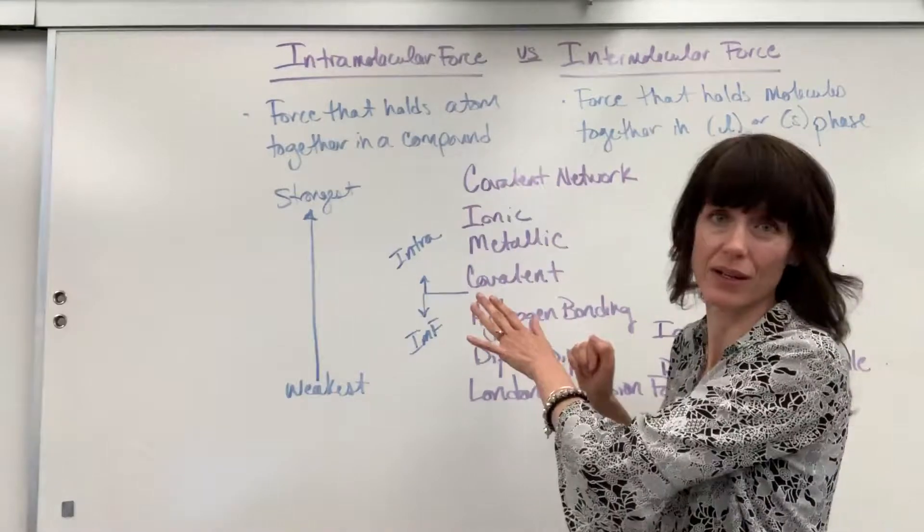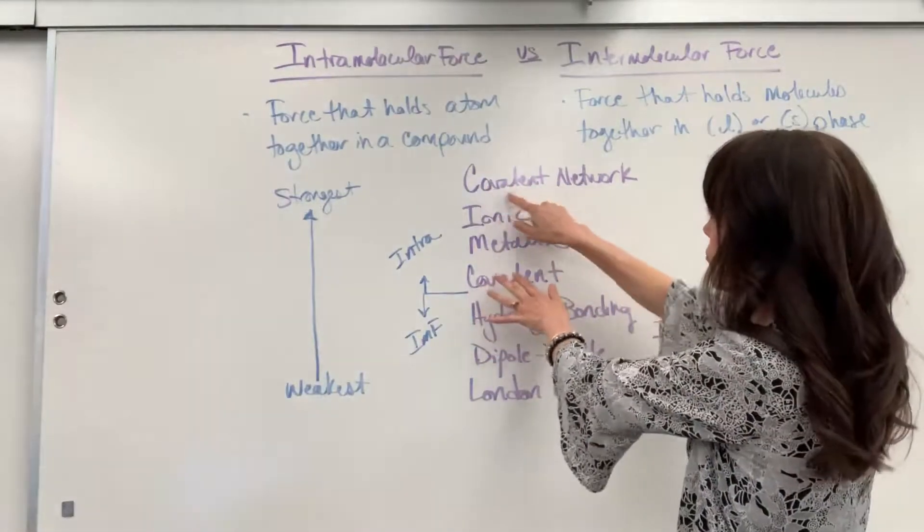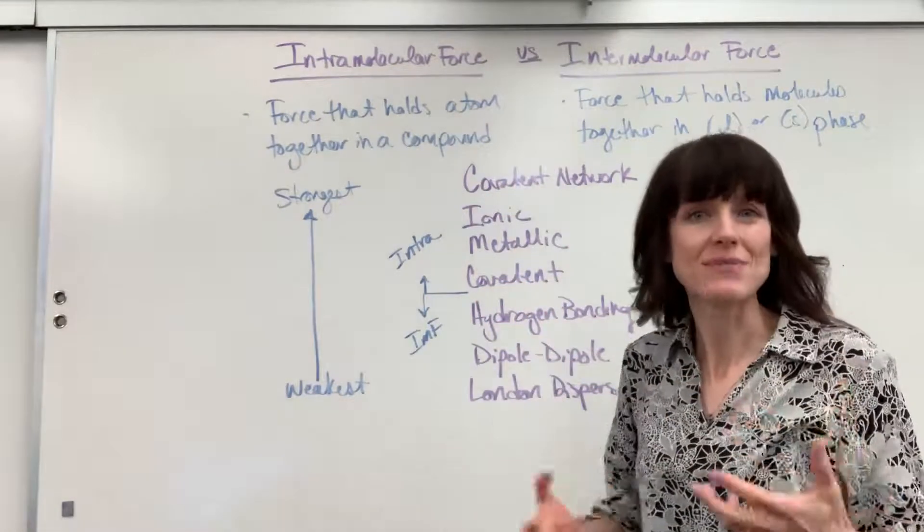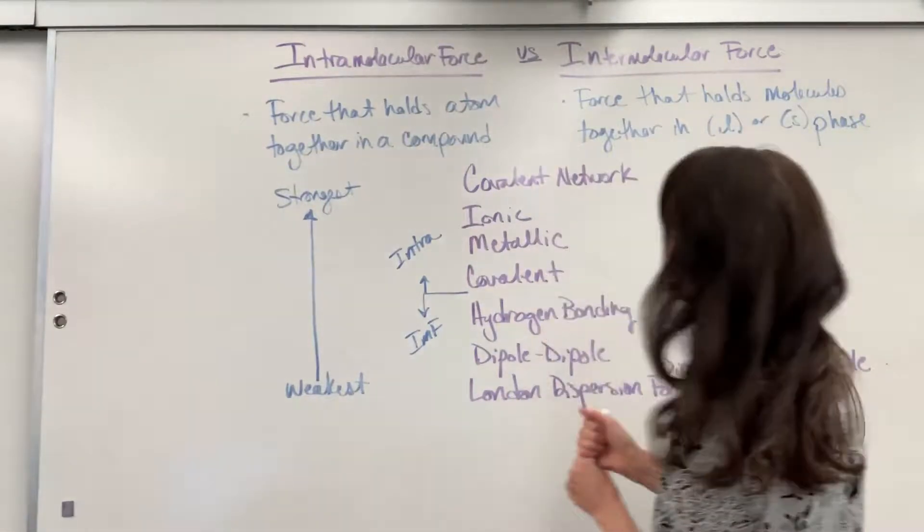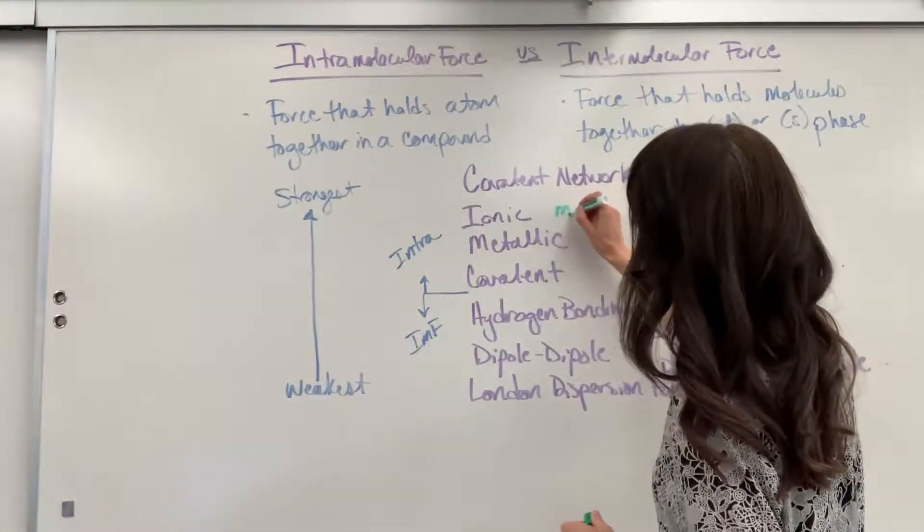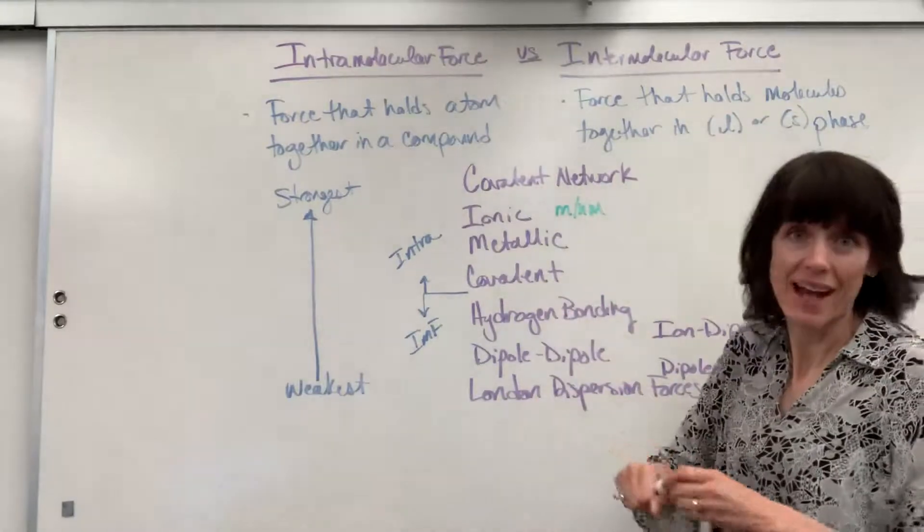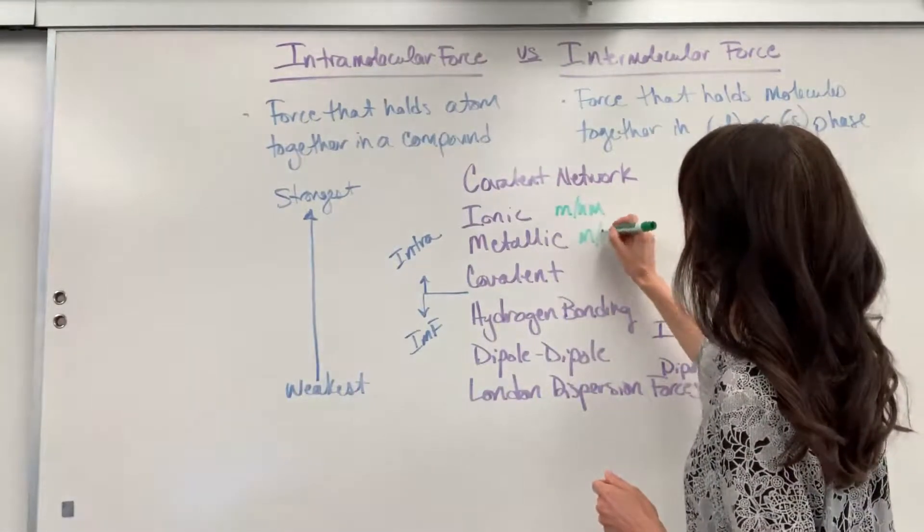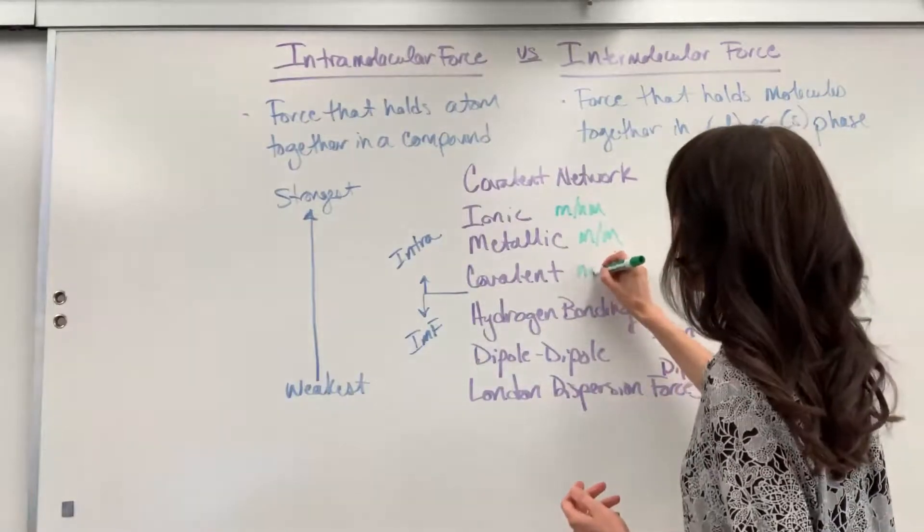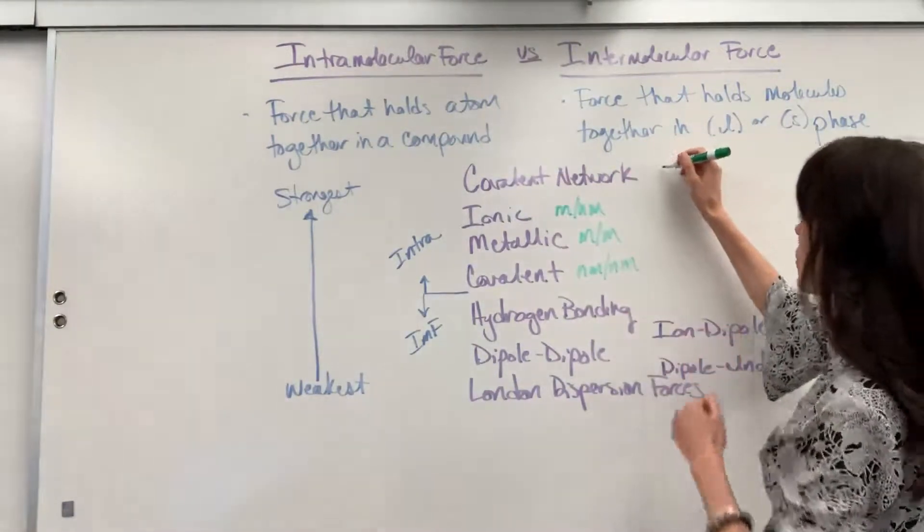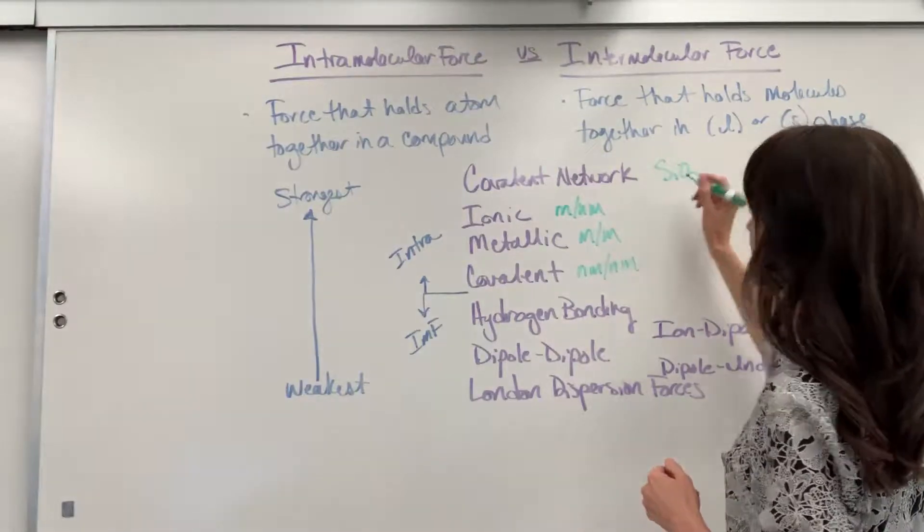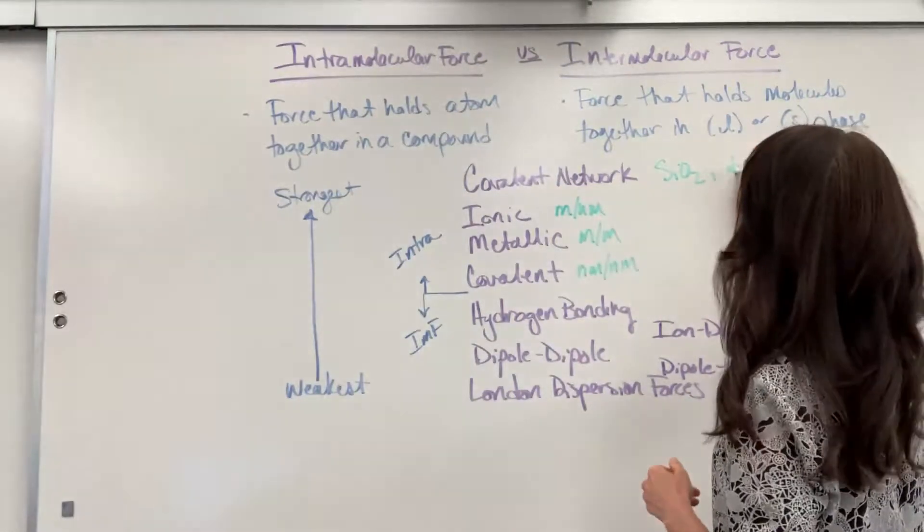I've listed our intramolecular forces right here. We've got covalent network, so that's like your diamond and your silicon dioxide. Ionic compound, that's going to be your metal with the non-metal. Metallic, remember this is metal and metal. And then covalent, that's your non-metal, non-metal. Here, actually this comes up to the covalent network. I'll put silicon dioxide, that's quartz. And we also have diamond.